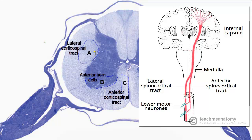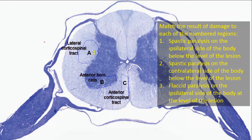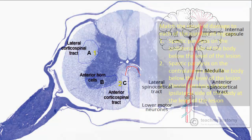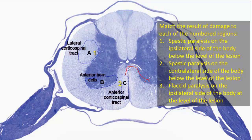For lesion two — contralateral spastic paralysis — the lesion is in C, the anterior corticospinal tract. These are the corticospinal fibers that did not cross at the pyramidal decussation, constituting 10 to 25 percent of fibers. They form the ventral or anterior corticospinal tract and ultimately cross at segmental levels through the anterior white commissure to terminate on anterior horn cells. Damage at spinal levels therefore results in contralateral spastic paralysis.